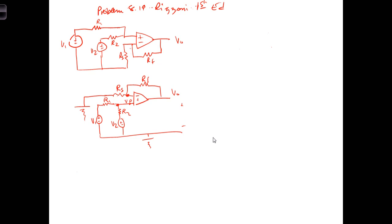As an example of analyzing an op-amp circuit, let's take a look at this circuit from Rizzoni, 8th chapter homework, problem number 19. We're asked to show that the output voltage consists of the summation of V1 plus V2, scaled by values associated with R1, R2, R sub F, and R sub S.